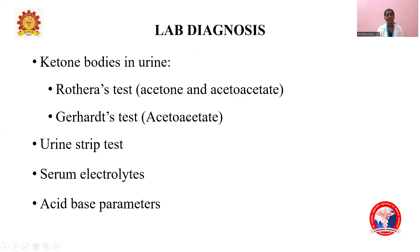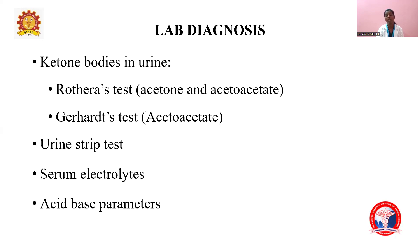Ketone bodies in urine can be detected by Rothera's test, which identifies acetone and acetoacetate. To specifically identify acetoacetate, Gerhardt's ferric chloride test can be performed. Additional diagnostic methods include urine strip tests, serum electrolytes to measure sodium and potassium levels, and acid-base parameters such as pH and pCO2. Treatment involves administering insulin and glucose, but potassium levels must be monitored carefully as insulin can cause hypokalemia by shifting potassium from extracellular to intracellular compartments.